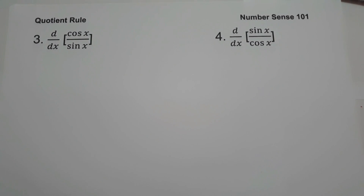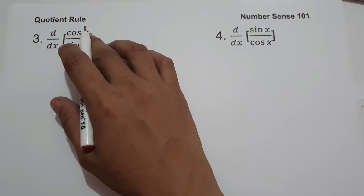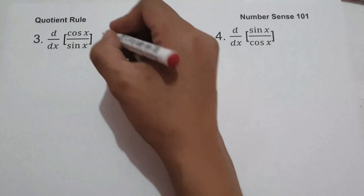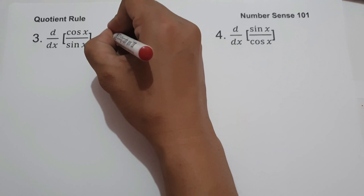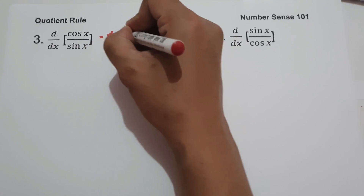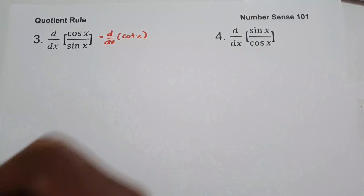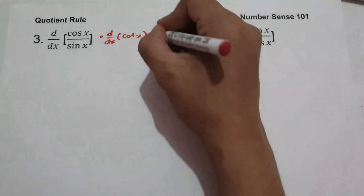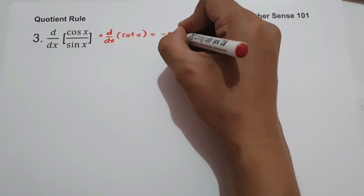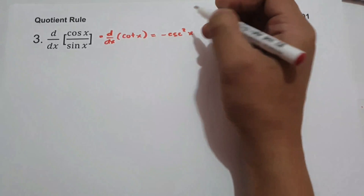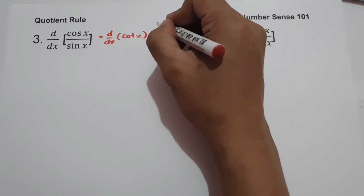On number 3, what is the derivative of cosine x over sine x? The fastest way to answer this is to use the trigonometric identity: cosine x over sine x equals cotangent x. The derivative of cotangent x is negative cosecant squared x, and this will be our answer.